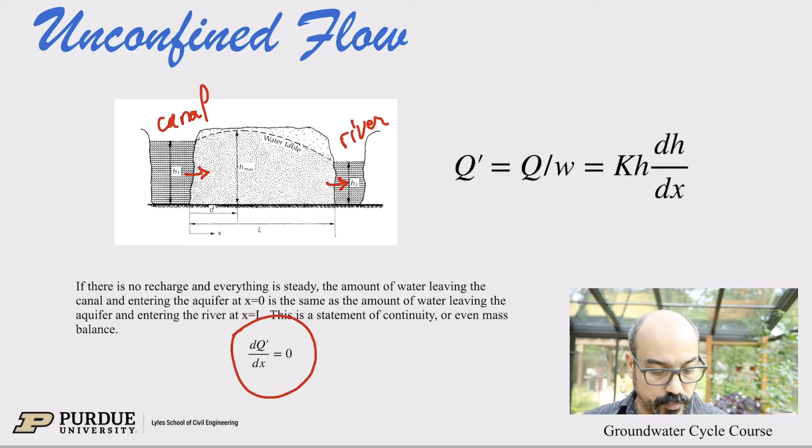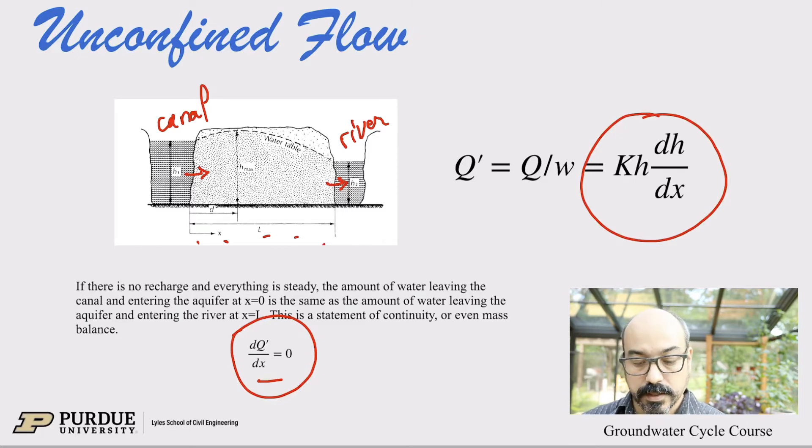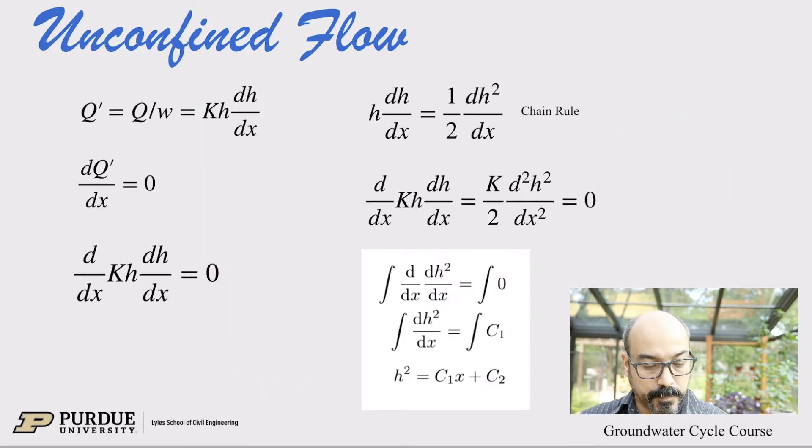Now that means that dQ'/dx equals zero. So that means the change of Q' as a function of distance is zero. There's no change. There's no recharge. There's nothing changes. Everything is the same. Okay. Well, now we can write this because now we have an equation for Q' and we know that the first derivative in space is zero. So let's try and find what that means.